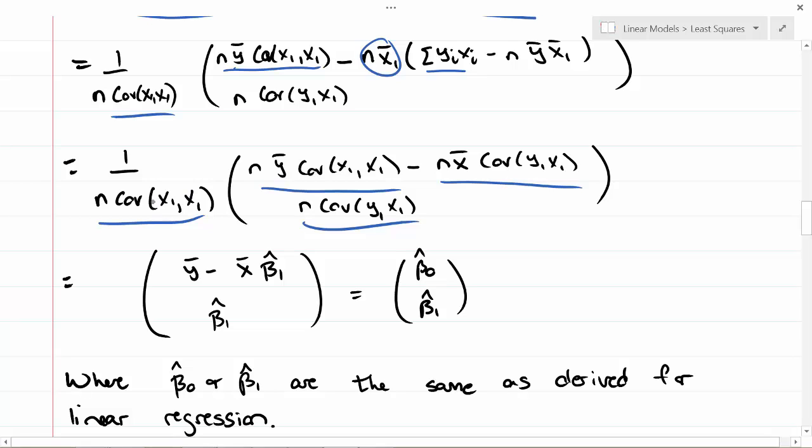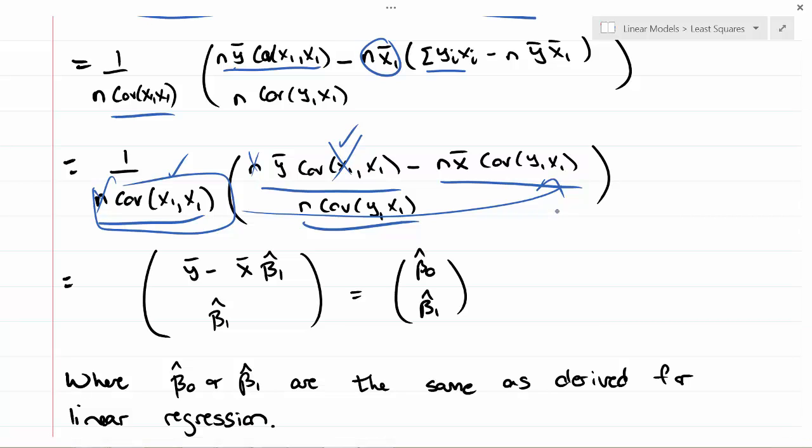Now when I divide this guy by this guy, it goes away, and the n cancels out. If I take this and divide it into here, the n will cancel, and the covariance of y and x divided by the covariance of x with itself is beta-1 hat. So I wind up with y-bar minus x-bar beta-1 hat. The covariance of y and x divided by this guy will be beta-1 hat. You can see that you get the beta-naught hat and beta-1 hat that we had before.